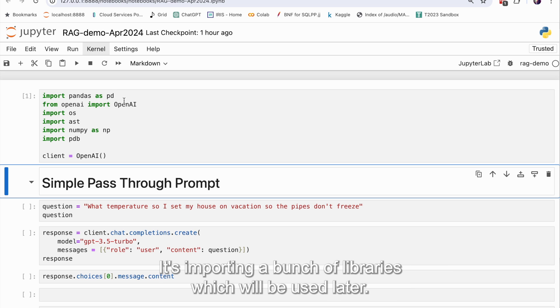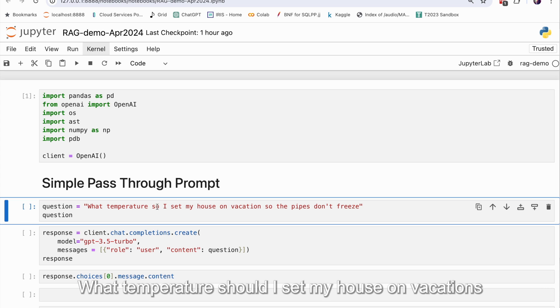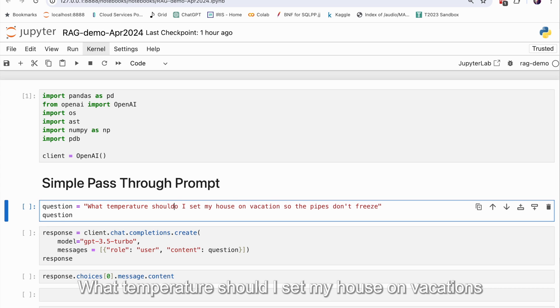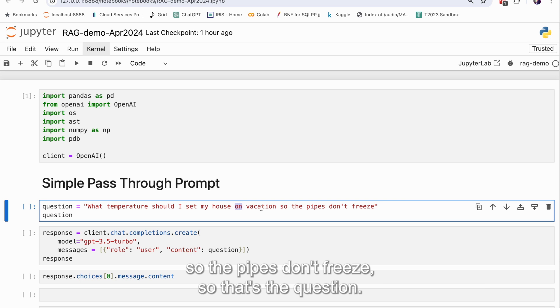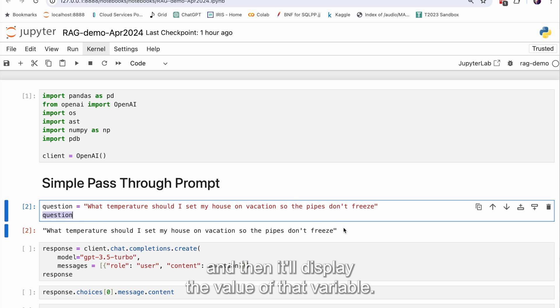So this first cell is not doing too much. It's importing a bunch of libraries, which will be used later. So we're going to do a simple pass-through prompt, and the prompt I chose is just something you might ask chat GPT. What temperature should I set my house on vacation so the pipes don't freeze? So that's the question. So if I run that cell, it sets this string into this variable, and then it'll display the value of that variable.